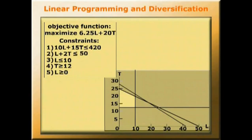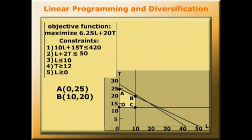So here's the diagram that we now have. We've labelled the points of the feasible area: A, B, C, and D. Point A having the coordinates 0 and 25, Point B having the coordinates 10 and 20, Point C having the coordinates 10 and 12, Point D having the coordinates 0 and 12.